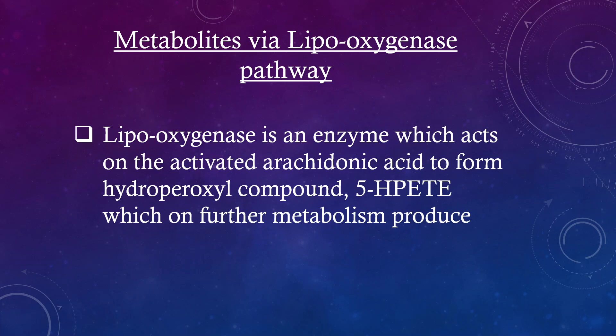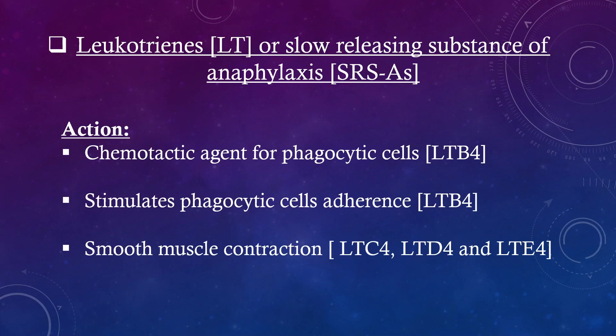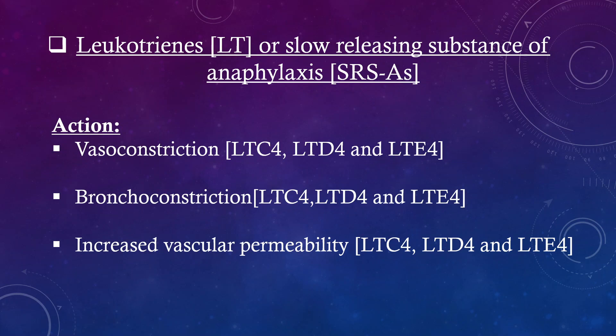Metabolites via the lipooxygenase pathway. Lipooxygenase is an enzyme which acts on activated arachidonic acid to form the hydroperoxyl compound 5-HPETE, which on further metabolism produces 5-HETE. Action: potent chemotactic agent for neutrophils. Leukotrienes (LTC4, LTD4, LTE4) are slow-reacting substances of anaphylaxis (SRS-A). Actions: chemotactic agent for phagocytic cells, stimulates phagocytic cell adherence, smooth muscle contraction, vasoconstriction, bronchoconstriction, and increased vascular permeability.